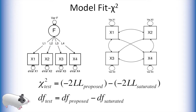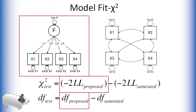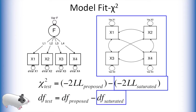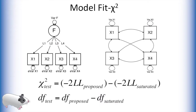The first fit index OpenMX provides is the chi-squared statistic. This is a very simple statistic that first calculates the negative 2 log likelihood of our proposed model, as well as its degrees of freedom. It then subtracts these values from the negative 2 log likelihood and degrees of freedom of the saturated model. The resulting values are then run as a chi-squared test with the appropriate degrees of freedom. In this way, the chi-squared tests if our proposed factor model is just as likely as the best possible fitting model to the data. If these models indeed have the same likelihoods, then the chi-square value would be zero. The less a factor model is like the saturated model, the higher the chi-square value. Thus, a significant chi-squared value would indicate a poor fit for our model.